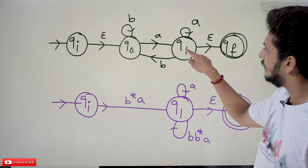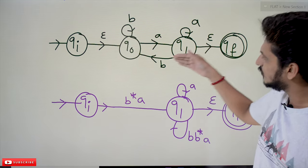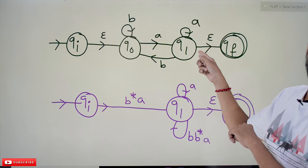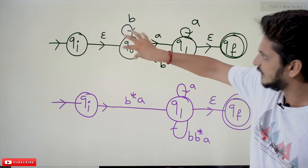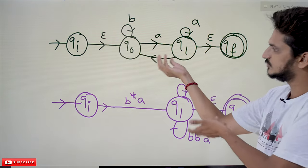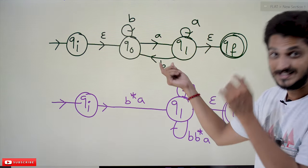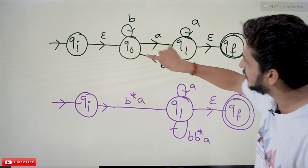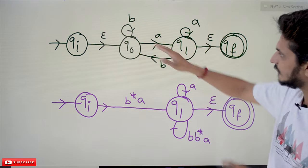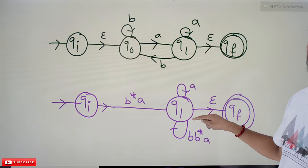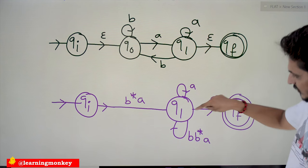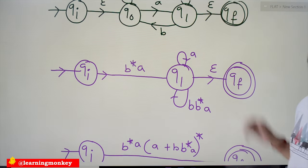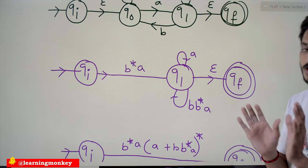We also need to handle the edge from Q1 back to Q0. When eliminating Q0, from Q1 taking B we go to Q0, and from Q0 taking B*A we return to Q1. So this becomes a self-loop on Q1 labeled BB*A. After eliminating Q0, the DFA has QI connected to Q1 via B*A, and Q1 has a self-loop BB*A, with Q1 connected to QF via epsilon.